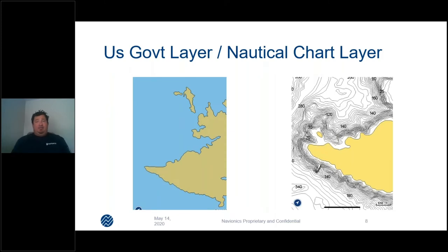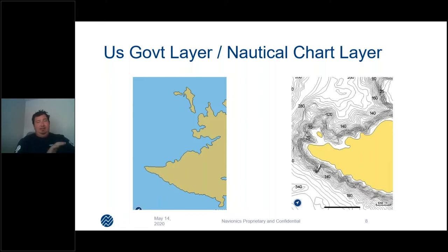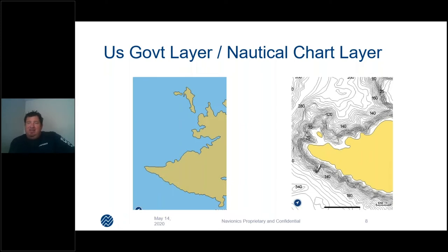Here's a quick comparison: the left screen shows the U.S. government layer — same exact area — just very basic, just the shoreline. Next to it is the nautical chart, which shows depth numbers like 35, 75, 120 — in roughly five-foot increments. It's decent but not high definition. Nautical charts are fine if you're not really using a fine-tooth comb to figure out an area. It's all just a button push on the same map with no extra cost — just select the nautical chart layer and you're good to go.